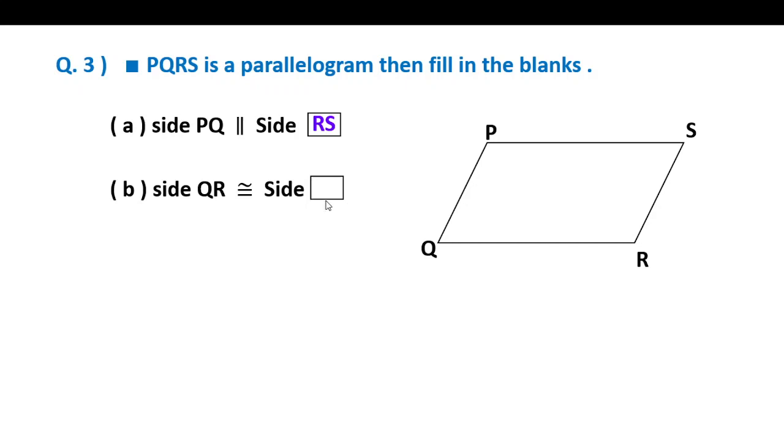Second: Side QR congruent to side? In parallelogram, opposite sides are congruent. QR's opposite side in this figure? This is QR. QR's opposite side is PS. Third: Angle P congruent to angle? Opposite angles are congruent. P's opposite angle? Here is angle P. P's opposite is angle R.